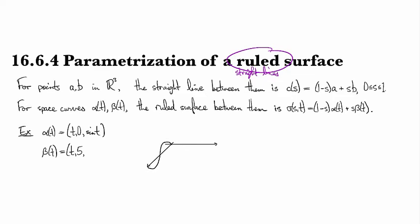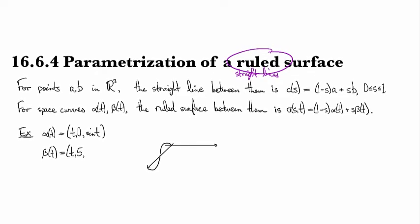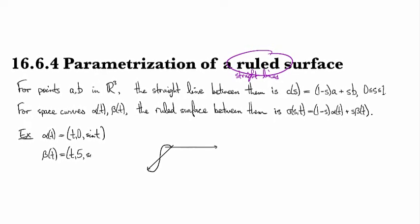Then I'll take β(t) to be a sine curve coming down not the x-axis but a line parallel to it, where y equals 5.